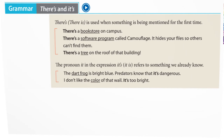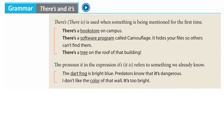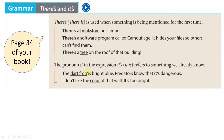On page 34 we can read 'there is' and 'it's'. For example we say: there is a tree on the roof of that building. In this sentence we introduce something new, which is the tree. So 'there is' is used when something is being mentioned for the first time — it's being introduced.